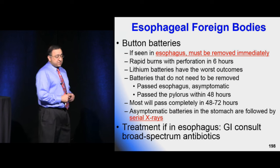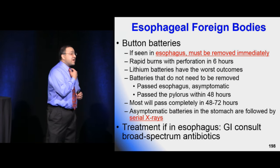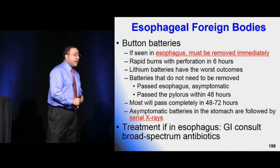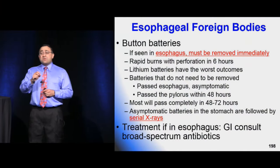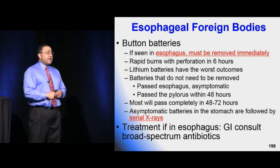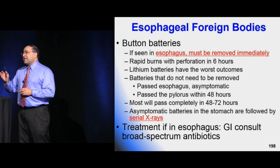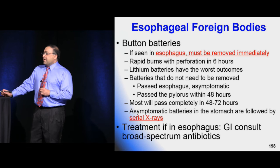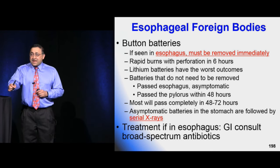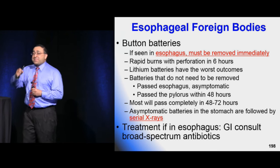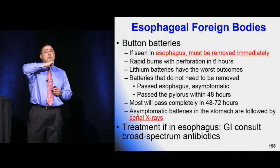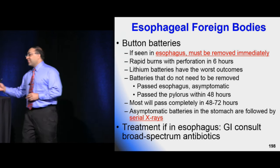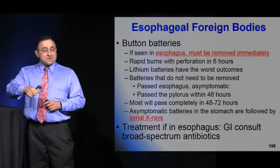As soon as you see a button battery in the esophagus, get GI to come remove it. The old technique of using a Foley catheter to pull it out was abandoned because the object could fall into the trachea at the oropharynx. If the button battery makes it to the stomach and is small, it'll probably be fine — but get serial X-rays over the next three days and have parents check stool. If it remains in the esophagus, consider starting broad-spectrum antibiotics to prevent mediastinitis.